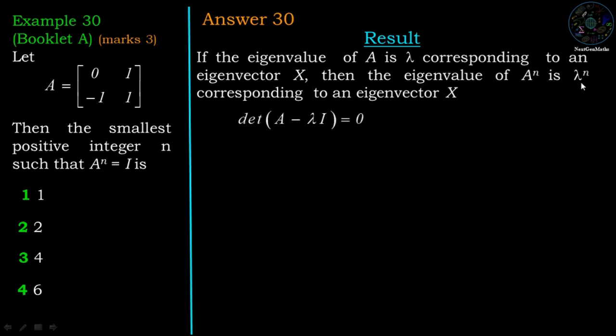Now, first we are going to calculate the eigenvalue of matrix A, which is the root of characteristic equation determinant A minus lambda I equal to 0. Subtract lambda from the diagonal entries of matrix A. So 0 minus lambda, 1, minus 1, 1 minus lambda, we have minus lambda times 1 minus lambda equal to 0.